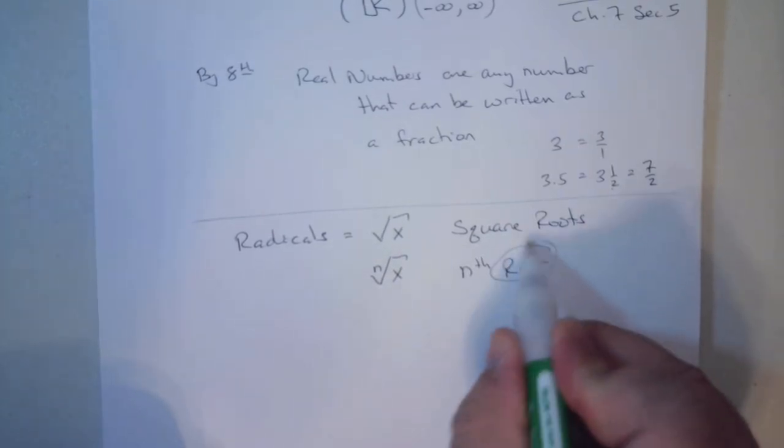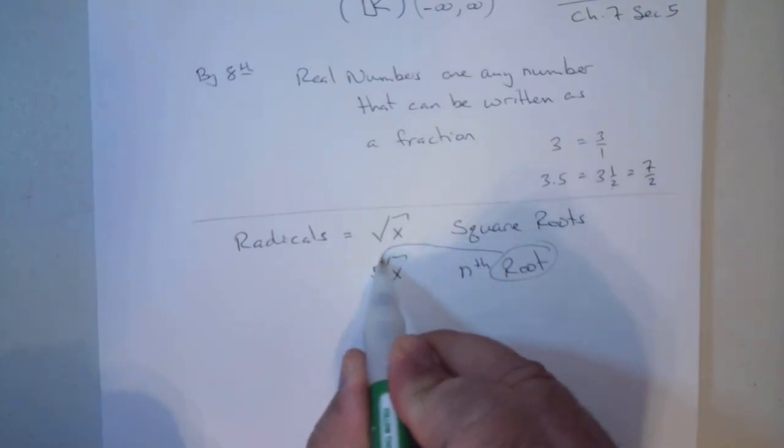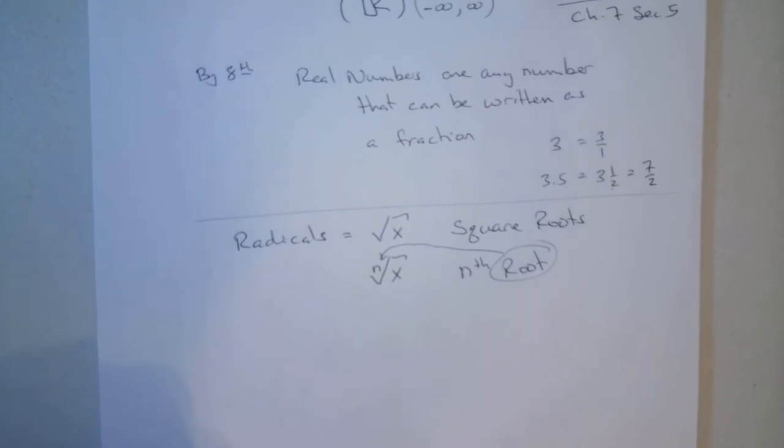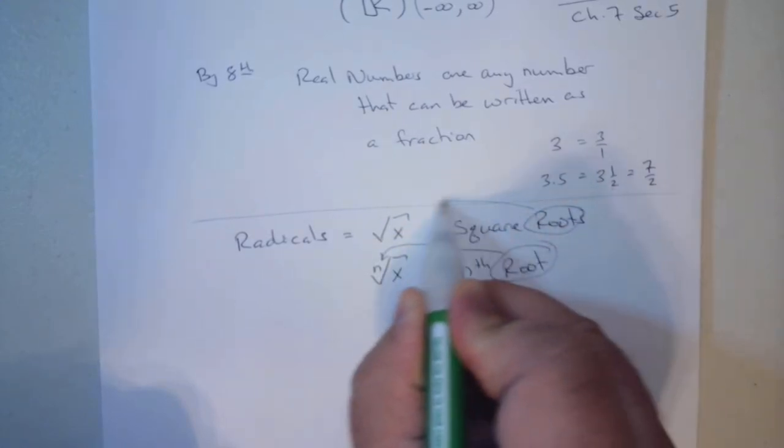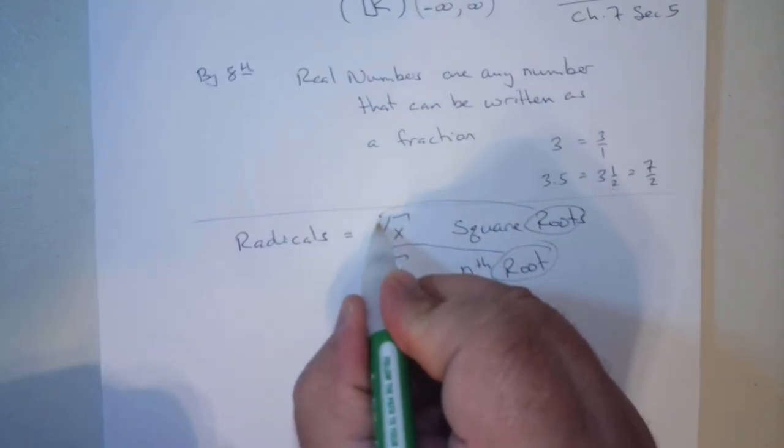The root is whatever is inside that v. That's what we reference to the root. If there's nothing there, the root is square. It's a 2.